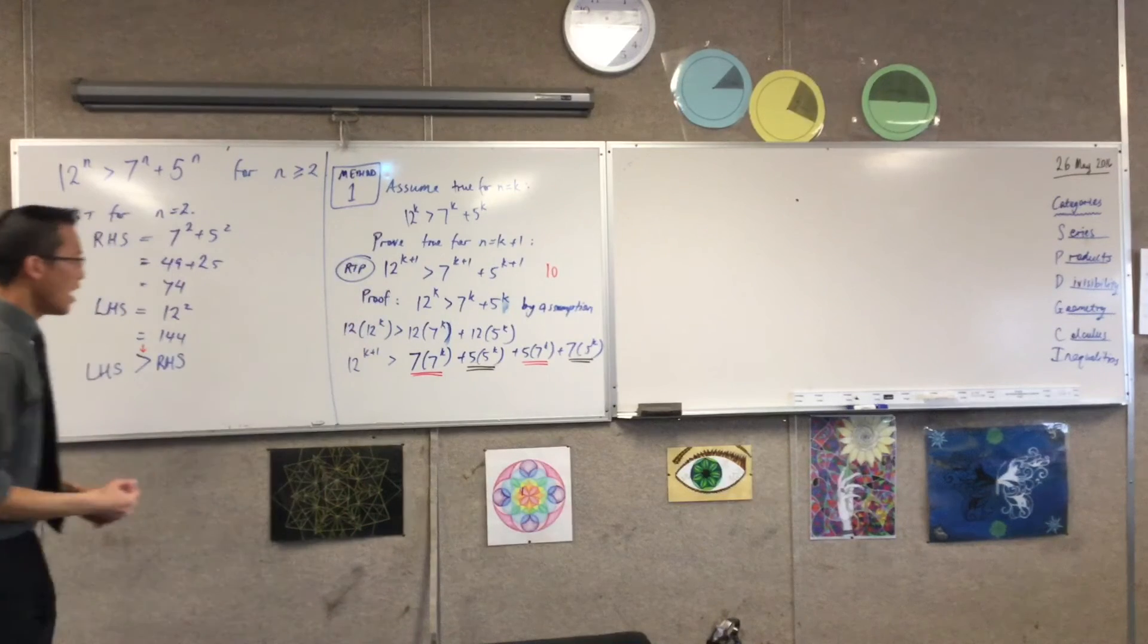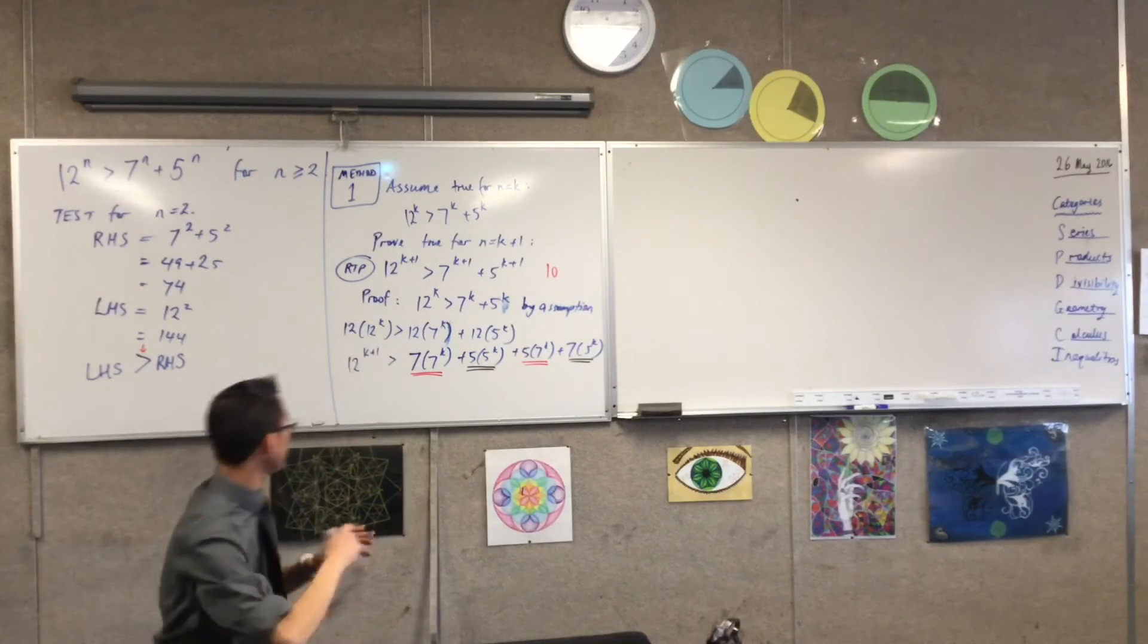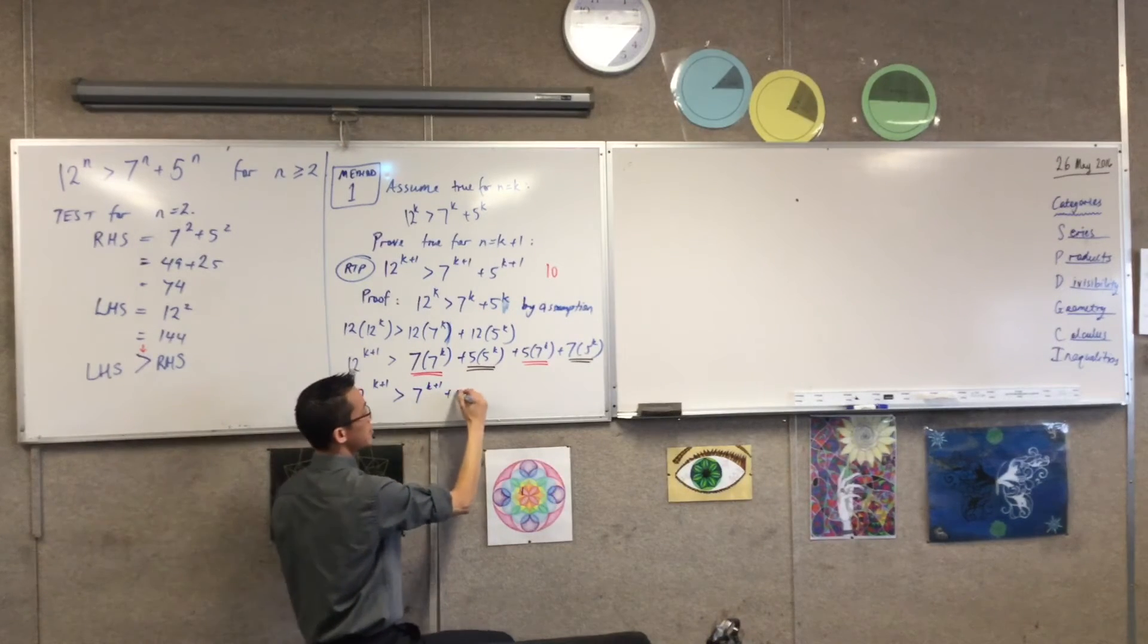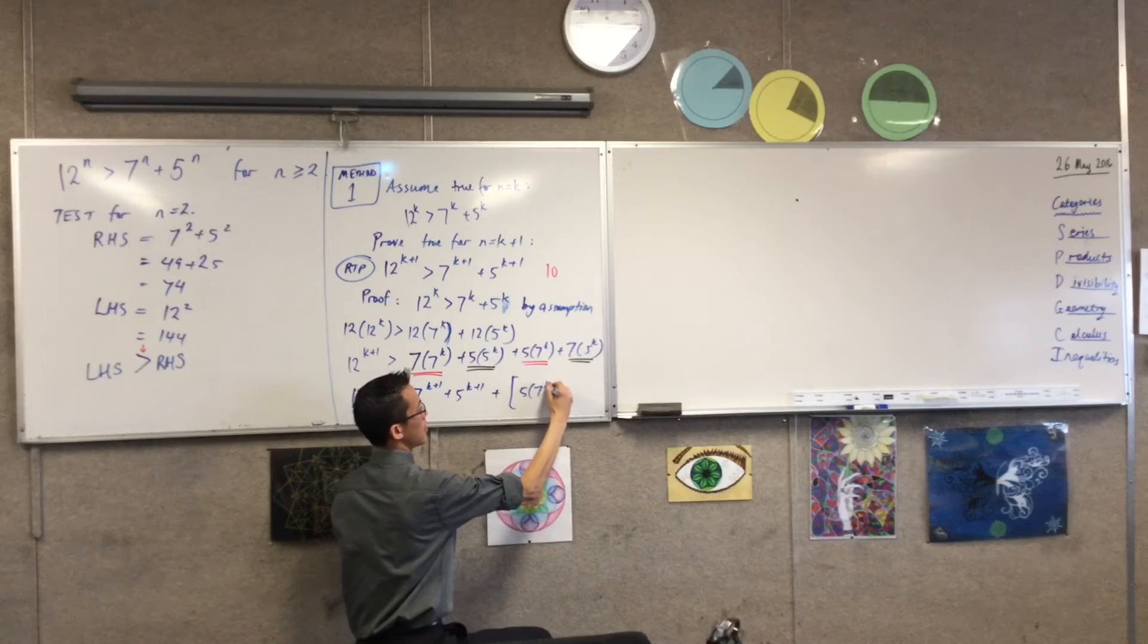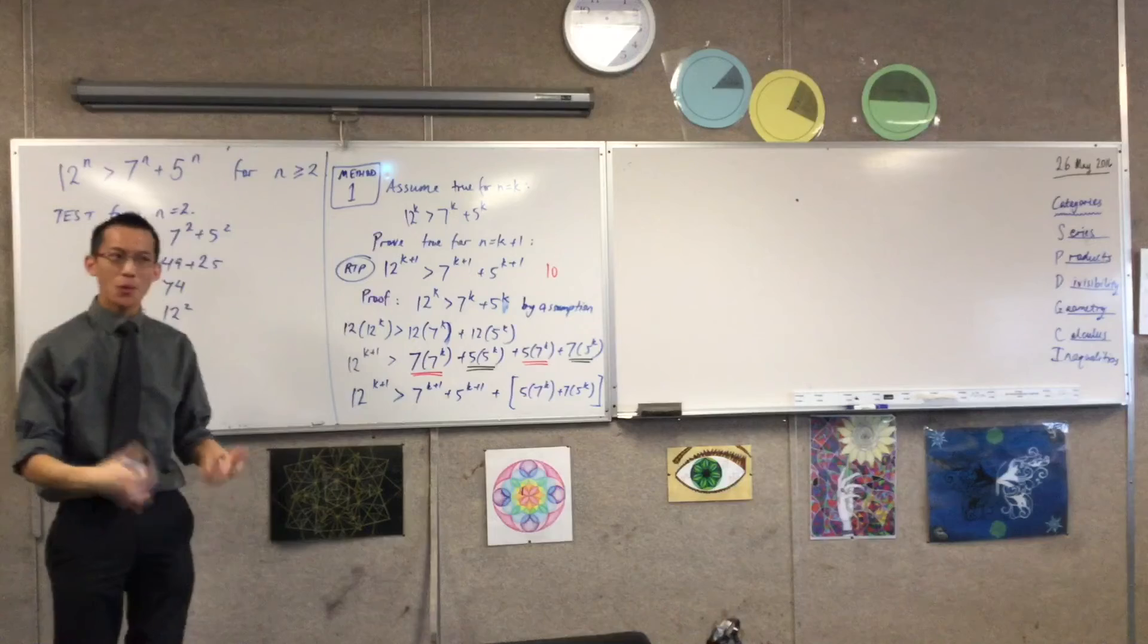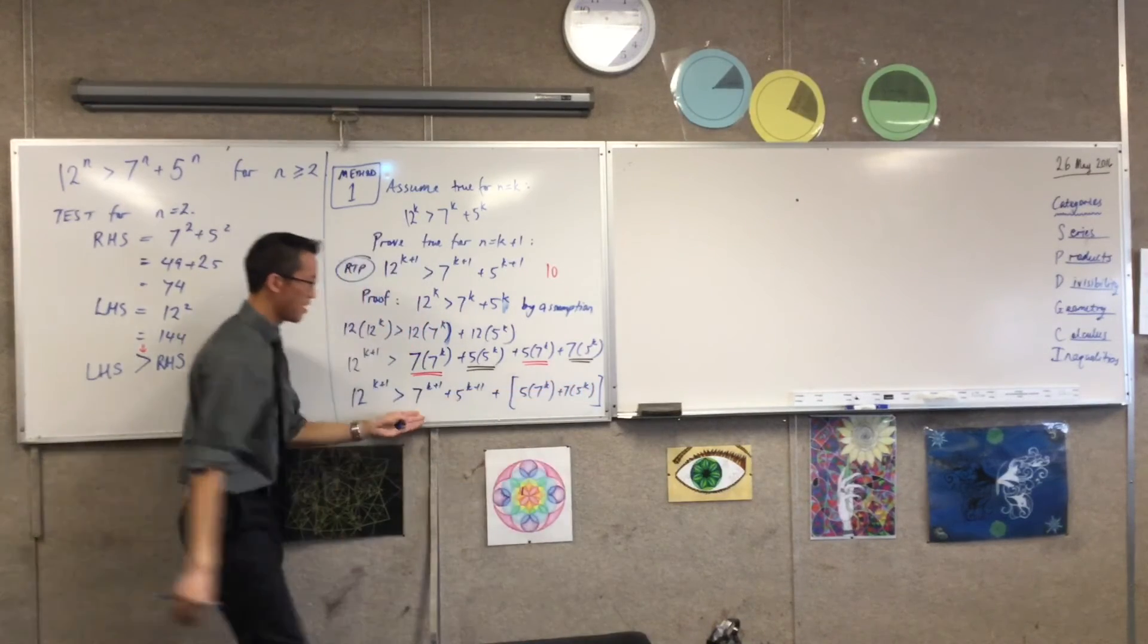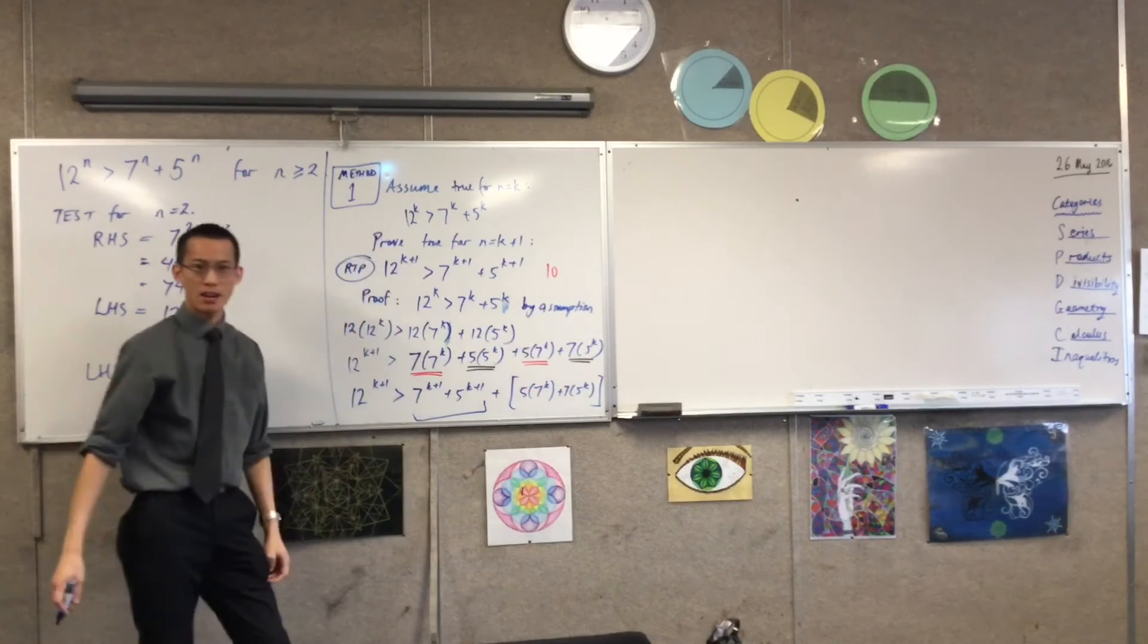Because what I've got here is 12 to the k plus 1, 12 to the k plus 1 is bigger than, now look at this, this is 7 to the k plus 1. And this is 5 to the k plus 1. And then you've got, I'm going to put a big set of brackets around it, all of this stuff. Remember what I wanted on this right-hand side is either this or something bigger than this. And I've got this plus some extra stuff, right? So if I'm bigger than all of this, I'll be bigger than this by itself. Does that make sense?